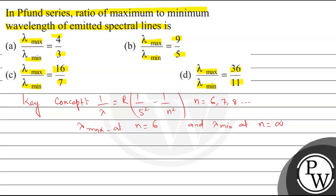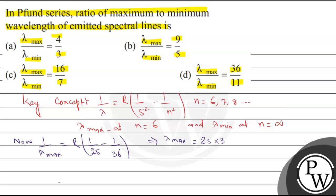At n = infinity, the subtracted term vanishes and the largest value remains. So 1/λmax = R(1/25 - 1/36). Since 6² = 36, this gives 1/λmax = R(36 - 25)/(25 × 36) = 11R/900. Therefore λmax = 900/(11R), i.e., 36 × 25/(11R).